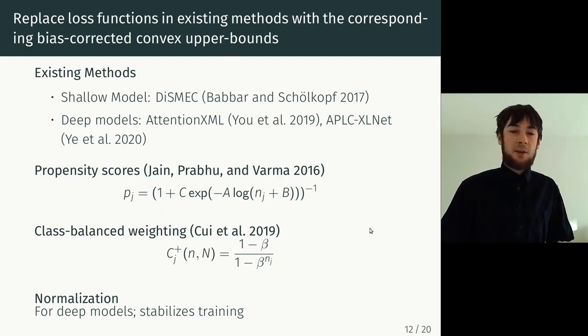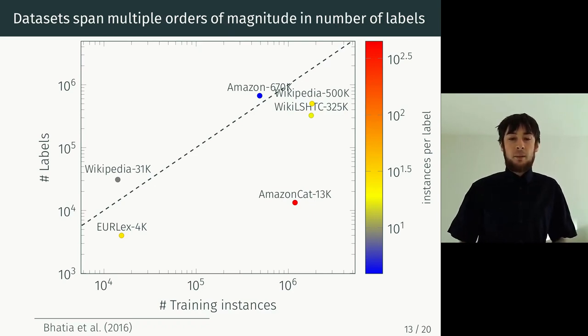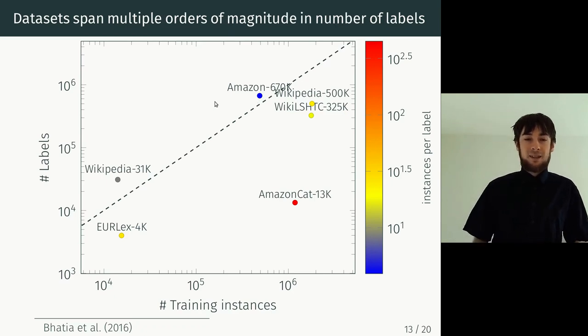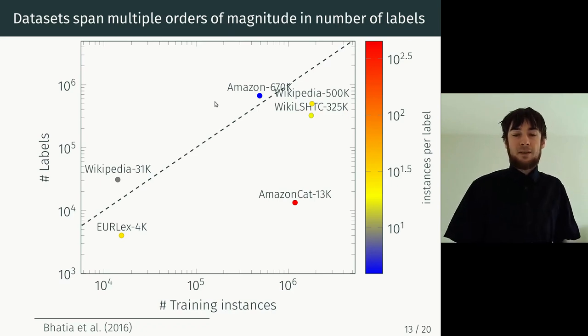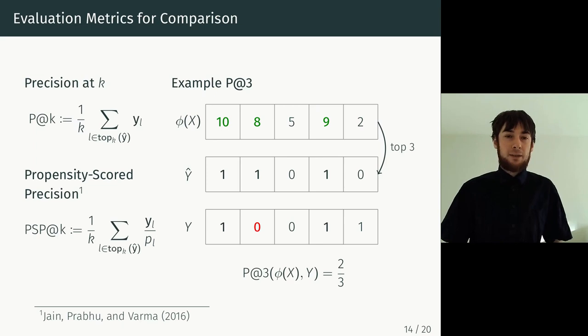So now we actually need to test these methods. And for that, we need some datasets. We took the datasets that are available as part of the extreme classification repository, because these datasets span a wide range in terms of orders of magnitude of training instances, and also of labels. And furthermore, even in terms of the number of instances that are positive for a label, which is shown in the color coding here. And you can see for the two datasets that are above this dashed line, there are actually more labels than there are training instances. So these are really challenging datasets.